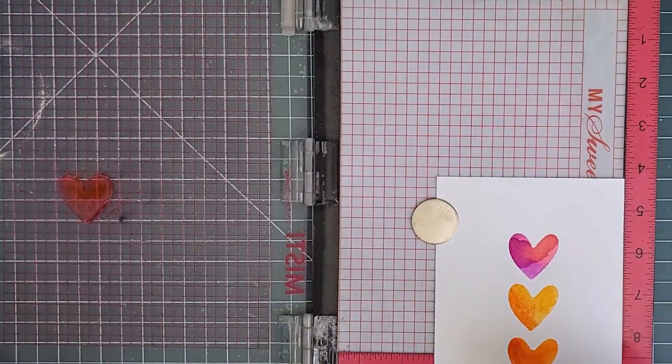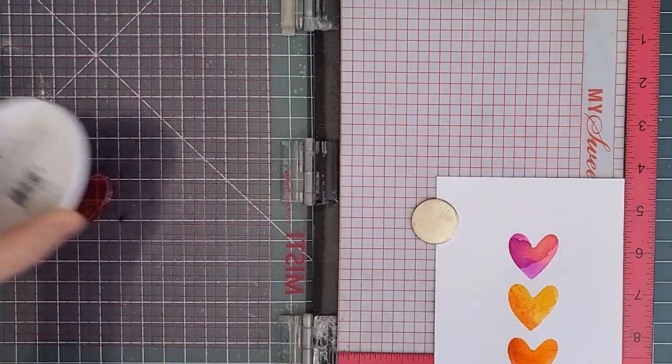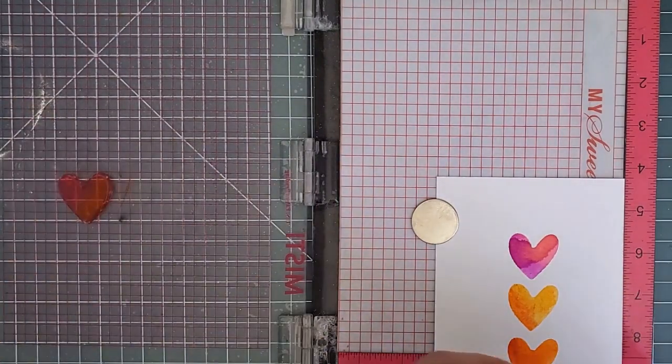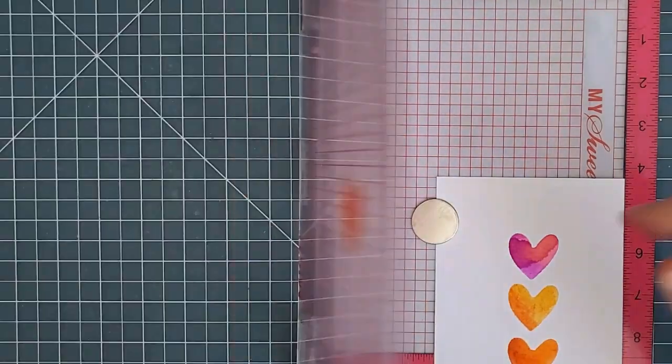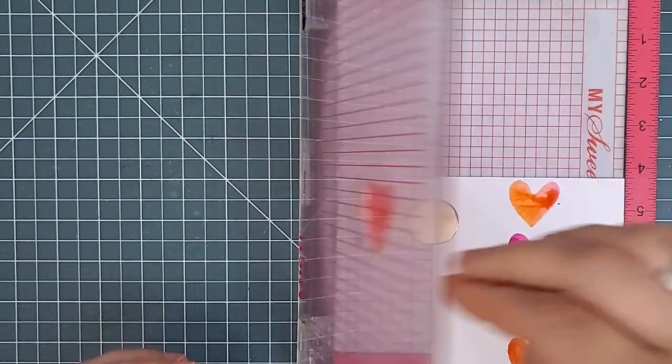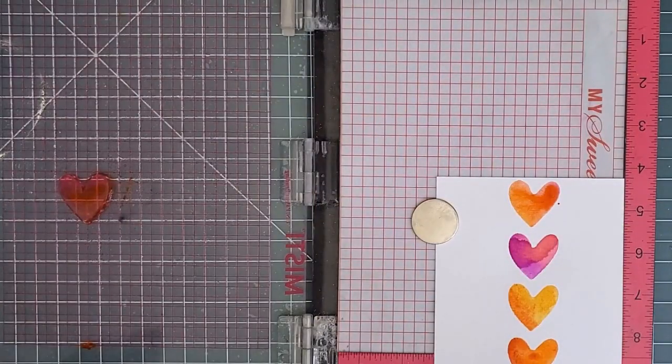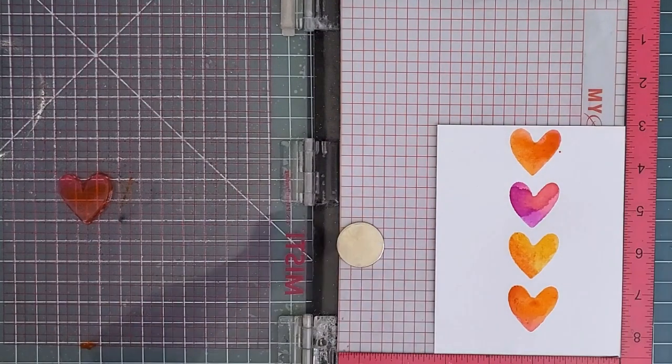When it's time to stamp the heart above the first one I stamped, I simply move the cardstock down by those five grid lines. This means the bottom of the panel is hanging over the bottom of the MISTI, but that's fine as long as I remember not to press down too hard on that door right there.